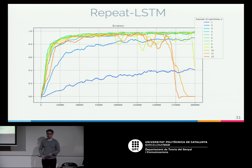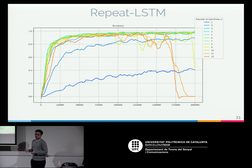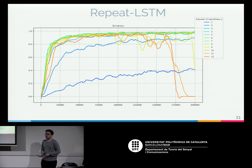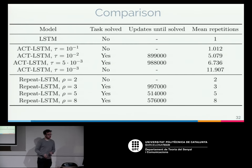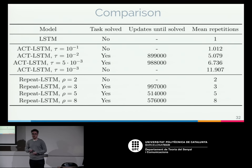We tested our new repeating baseline on the addition task and found it was also able to learn. With one repetition it's equivalent to the task without ACT, reaching only 40% accuracy, but with more repetitions the network learned. Again, too many repetitions caused instabilities. Surprisingly, even with fewer repetitions than ACT used, our baseline was able to learn faster — suggesting that adaptive computation time may not be effectively learning how many times it should look at each input.